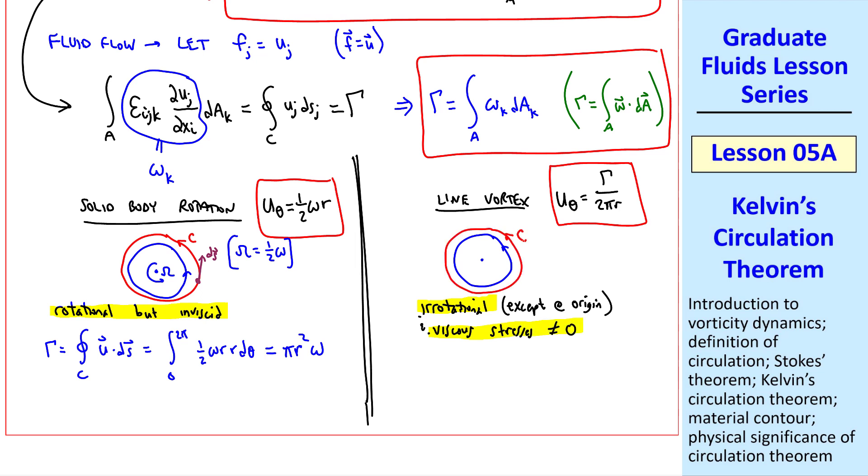Again, if we take a circular contour around the origin and integrate, we get the integral from 0 to 2 pi, gamma over 2 pi r, r d theta. And since the r's cancel, everything in here is a constant. When we integrate, we get 2 pi times gamma over 2 pi, which is equal to gamma. This result turns out to be true for any C that includes the origin. But for any C outside the origin, the circulation is zero. So the only thing that matters for the line vortex is whether the origin is included inside the contour or not.